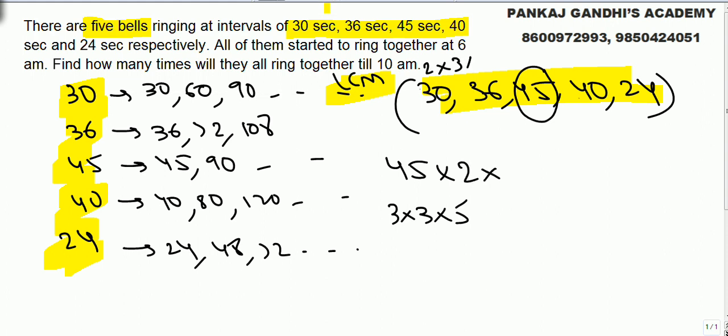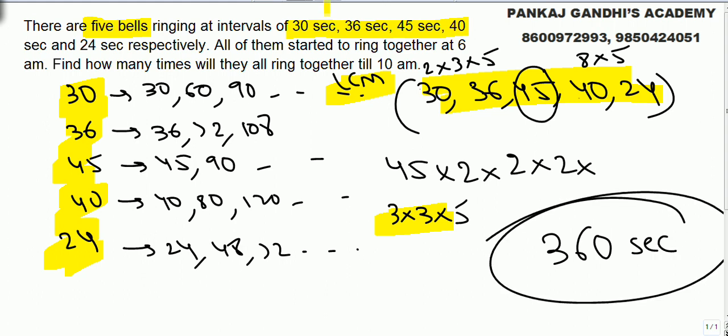30 was 2 into 3 into 5. 36 is 9, 4's a 9 is already there, so 4's a means one more 2. 40, for 40 I need 8 into 5, what is 8? 2 into 2 into 2. 5 is already there. 24 is 8, 3 is up, everything is there. So all the bells will ring together after every 360 seconds.